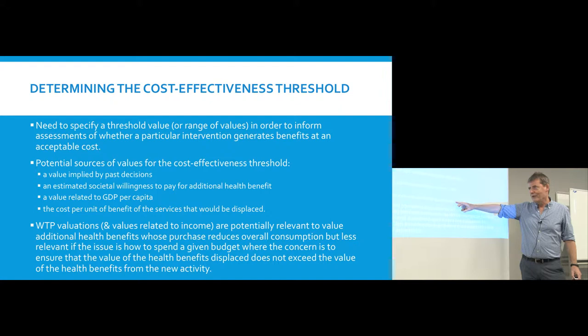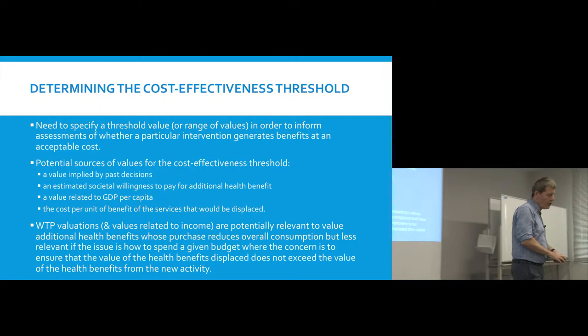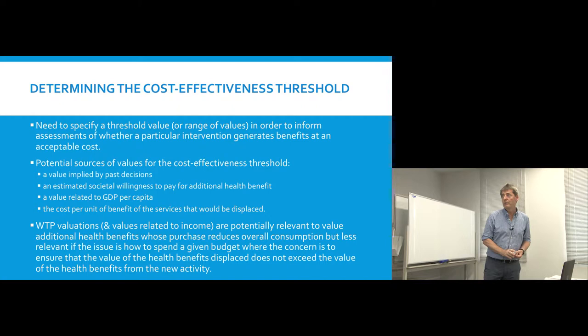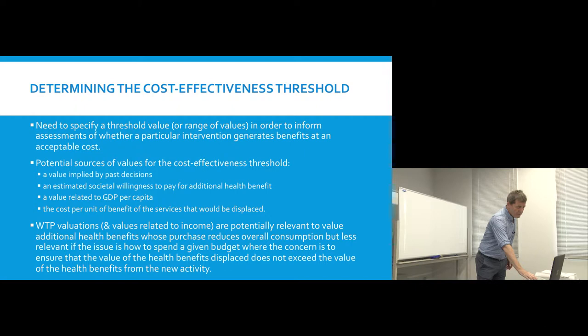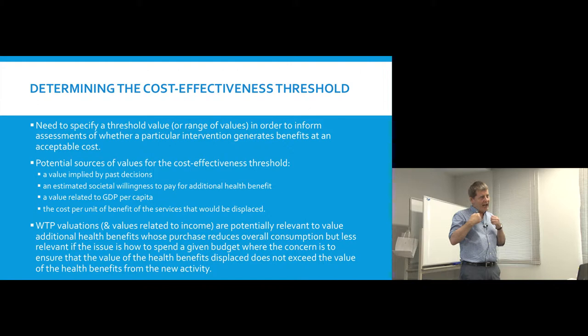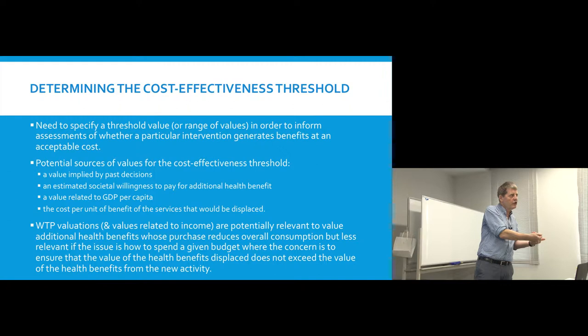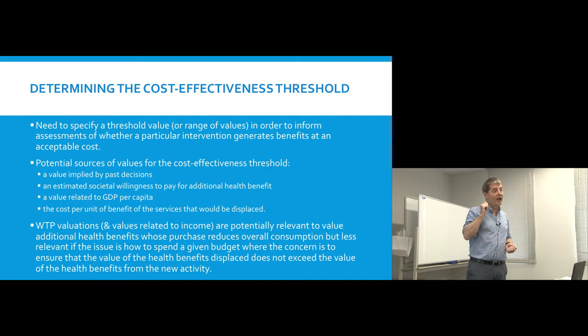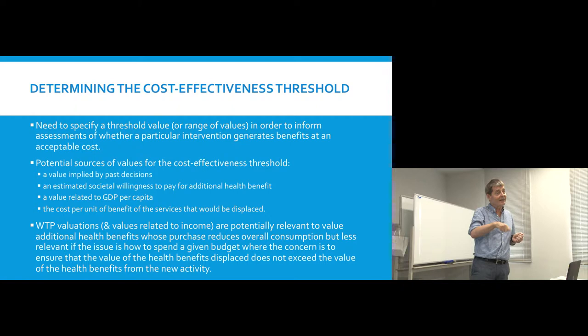The final approach is our primary candidate: the cost per unit of benefit of the services that would be displaced. Rather than some external guide like three times GDP per capita, what's being asked here is: if we introduce a new intervention, what are we going to displace? Because all health systems are budget constrained, if we introduce something new, we have to displace something — the money has to come from somewhere.